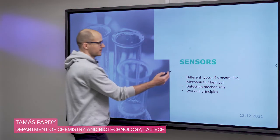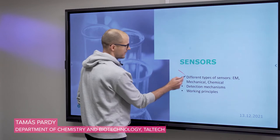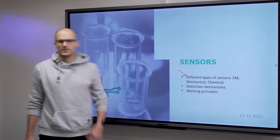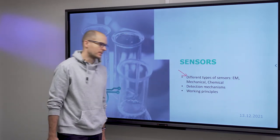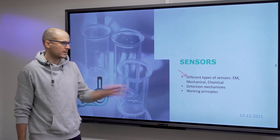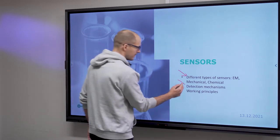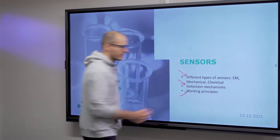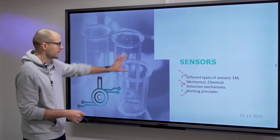In this video we talk about different types of sensors. The sensing principles are what we use to categorize them: electromagnetic, mechanical, chemical detection mechanisms corresponding to them, and working principles of these sensors.